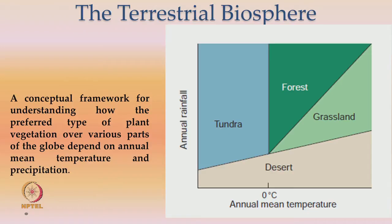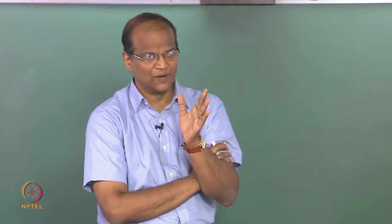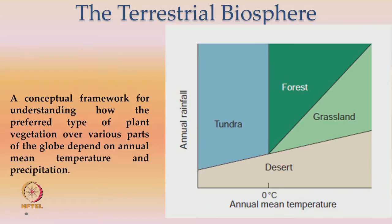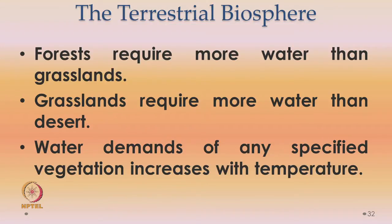The terrestrial biosphere is a good conceptual framework for understanding how a particular type of plant vegetation in various parts of the globe depends on annual mean temperature and precipitation. On the ordinate is rainfall and on the abscissa is the mean temperature. As the temperature increases, regardless of the type of vegetation, the amount of rainfall required increases. The temperature is very high in desert regions and low in tundra regions. To summarize: forests require more water than grasslands, grasslands require more water than desert, and the water demands of any vegetation type increase with temperature.